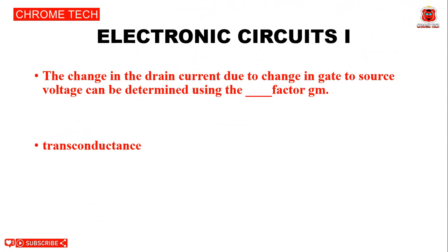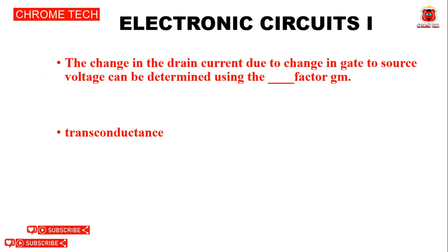Next question: The change in drain current due to change in gate-to-source voltage can be determined using the dash factor, GM. The answer is transconductance — transconductance factor.